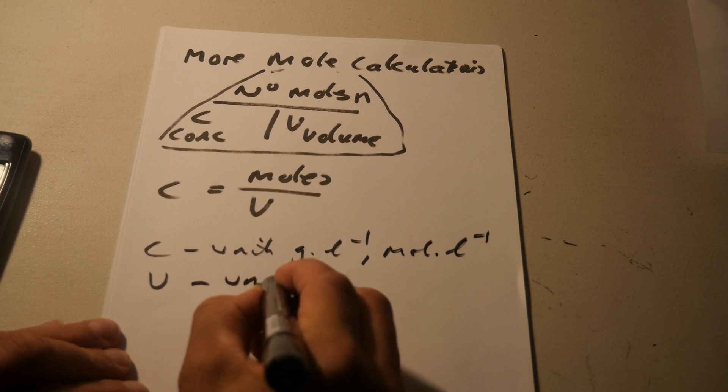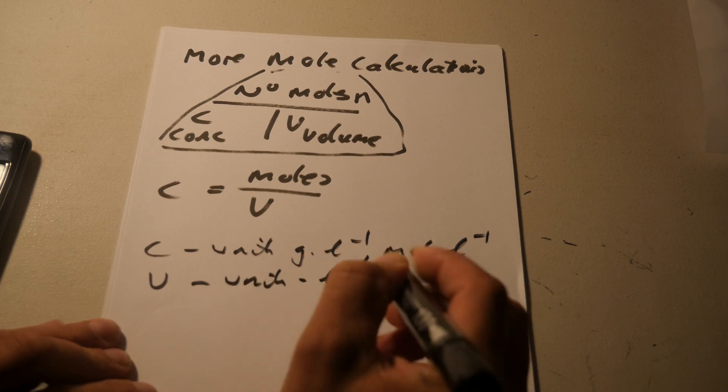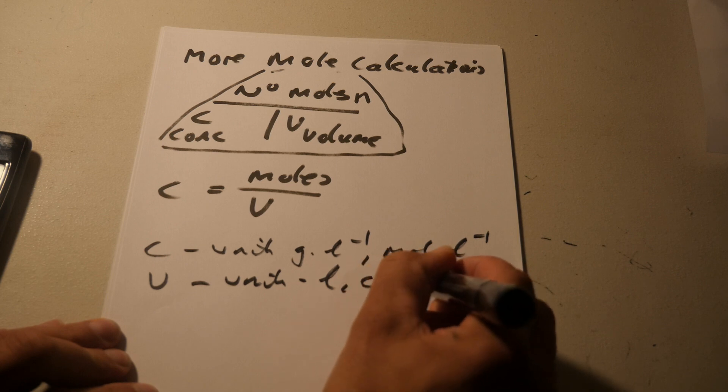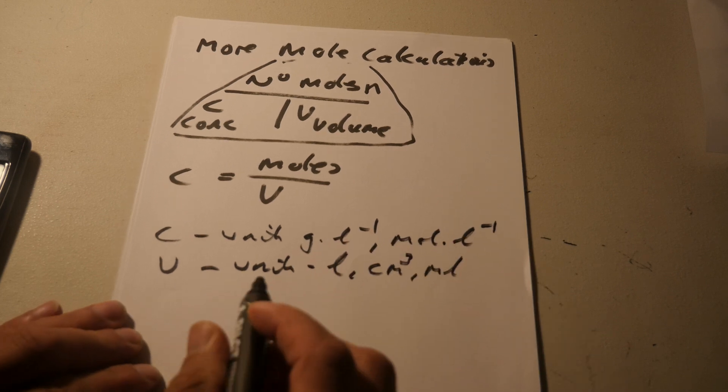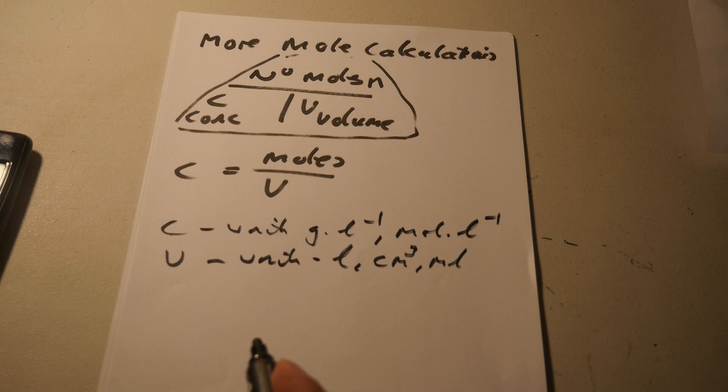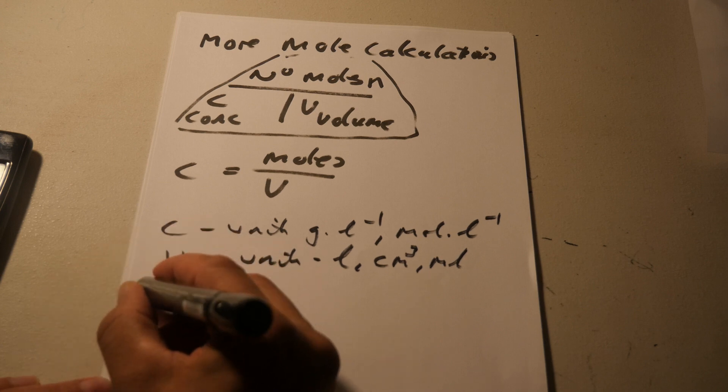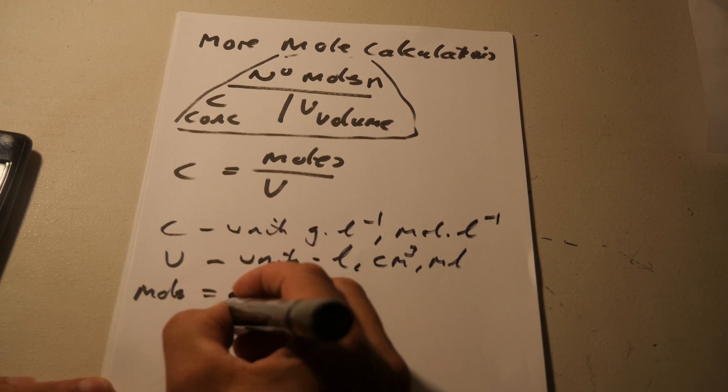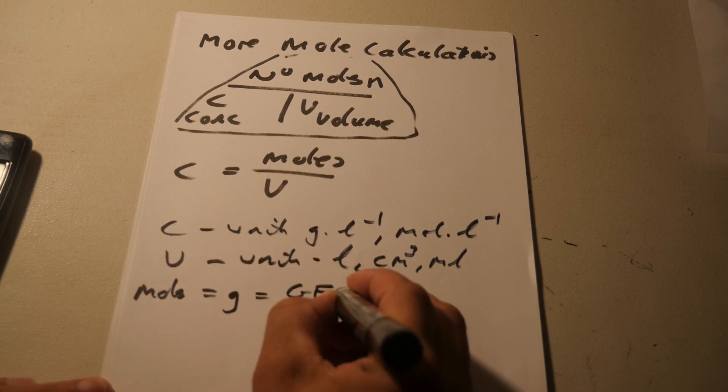Volume is units, obviously we just said liters. Or centimeters cubed or milliliters. A number of moles, well you know the units of those. It's the gram formula weight. Equals, so grams, which is the gram formula weight.